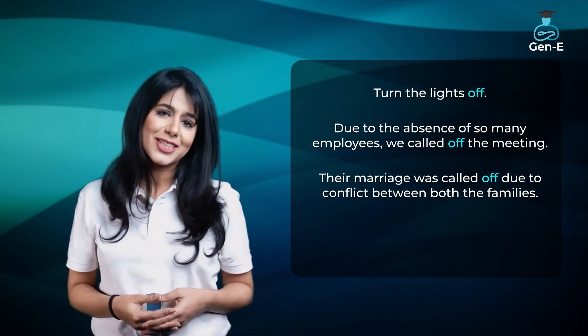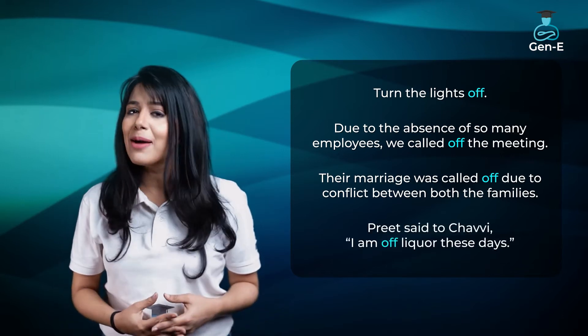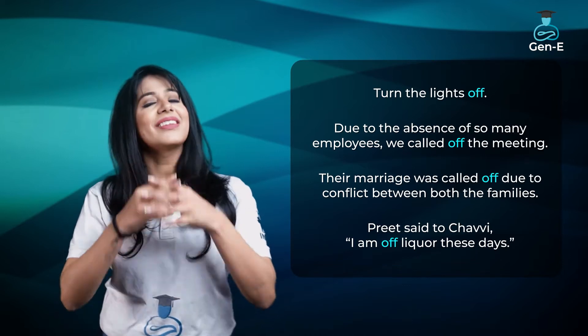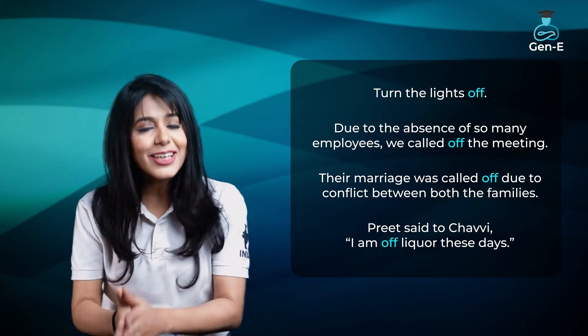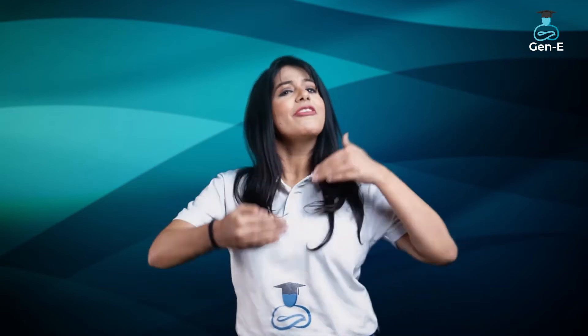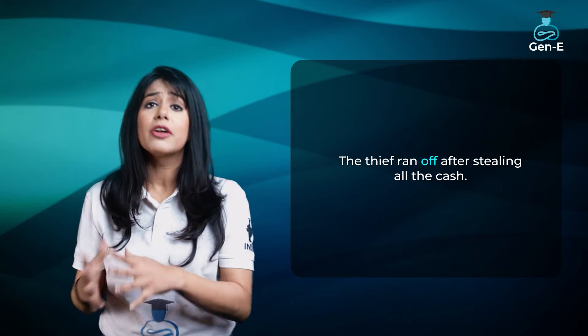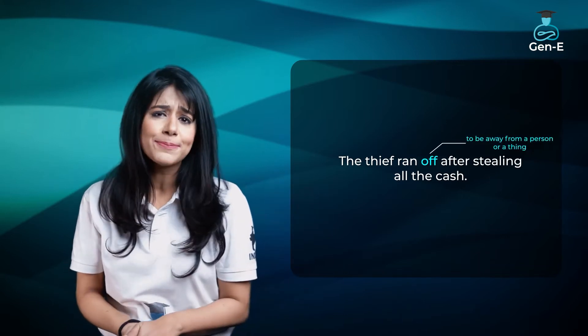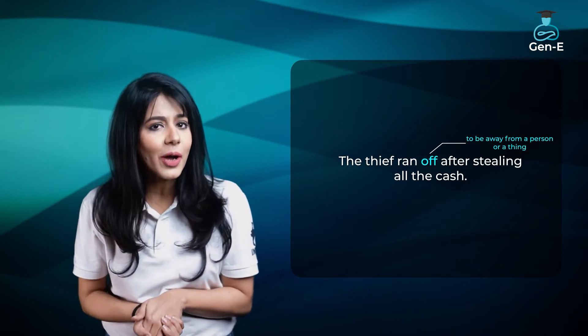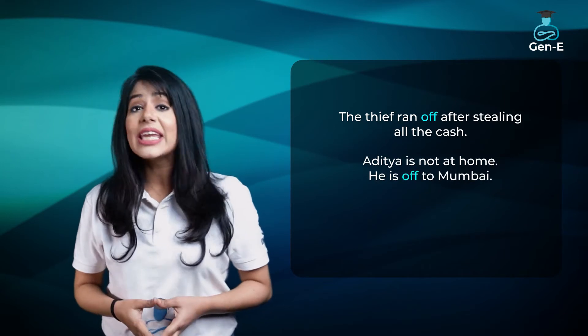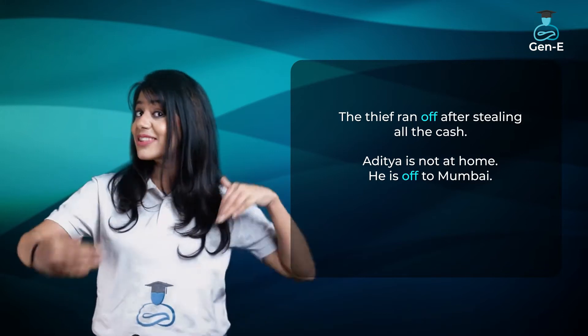Now look at one more sentence. Preet said to Chavi, 'I am off liquor these days.' Is sentence ka meaning hai, Preet ne liquor discontinue kar di hai. Off ka doosra matlab hota hai to be away from a person or a thing — matlab, kisi cheez se door ho jaana. Jaise, 'The thief ran off after stealing all the cash' — ran off ka matlab hai door bhaag gaya. Maan lo tumh apne friend ke ghar phone karte ho aur unki mummy tumhe bolti hai: 'Aditya is not at home, he is off to Mumbai' — iska matlab hai wo Mumbai gaya hua hai, matlab ghar se door gaya hua hai.